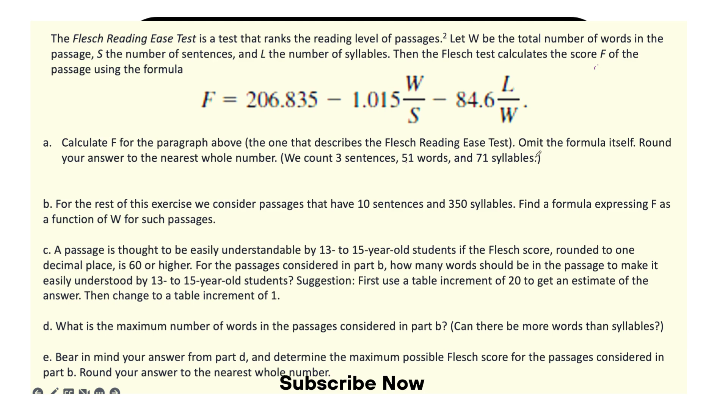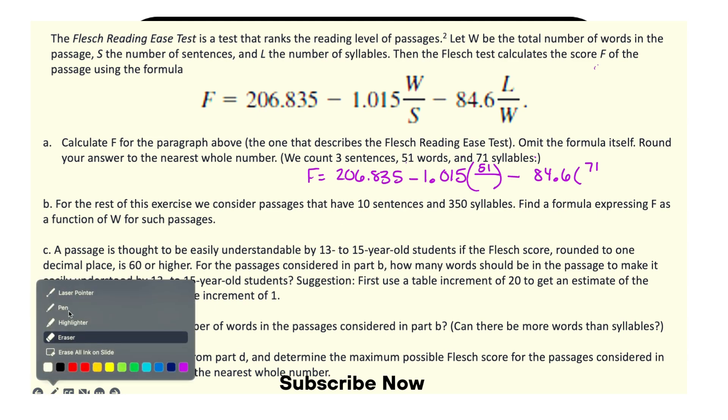So F equals 206.835 minus 1.015 W over S, which is 51, S which is 71, minus 84.6 times L, which is the number of syllables, so L is 71. Wait a minute, and S is the number of sentences. Oops, so that's three. It goes there. Let me just erase this. So then this is three.